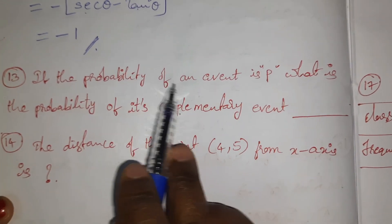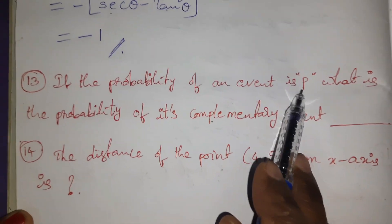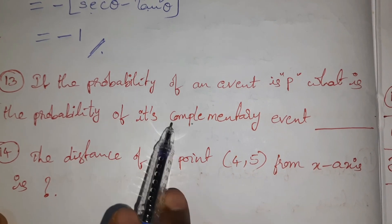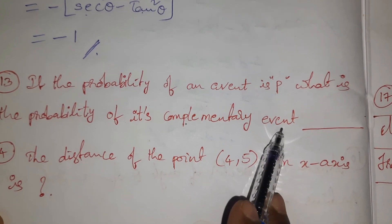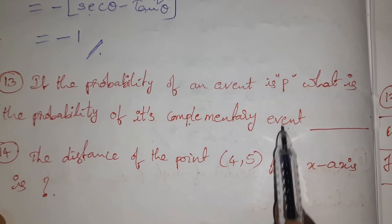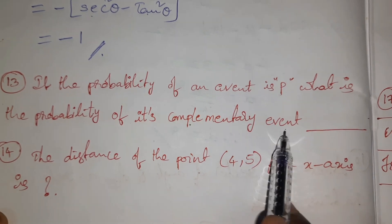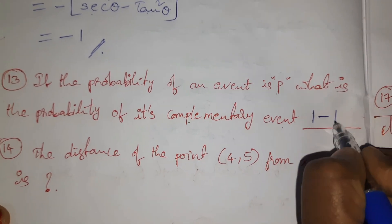If the probability of an event is P, then what is the probability of its complementary event? Complementary means negative, so event is positive means complementary means 1 - P.